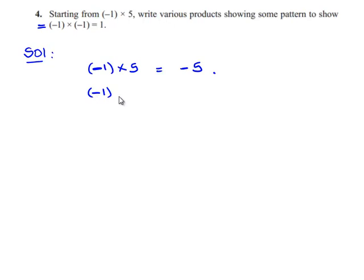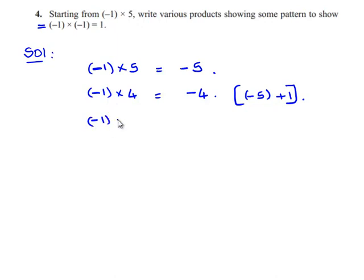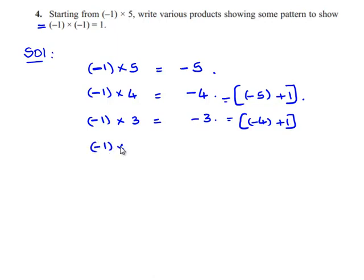Now we'll decrease the values. Negative 1 times 4 gives negative 4; this can be written as negative 5 plus 1. Decreasing by another value: negative 1 times 3 gives negative 3, which can be written as negative 4 plus 1. Decreasing again: negative 1 times 2 equals negative 2.